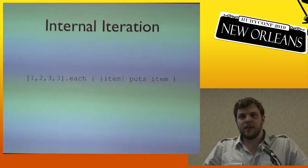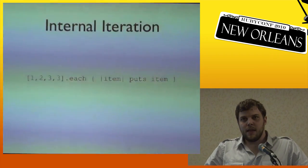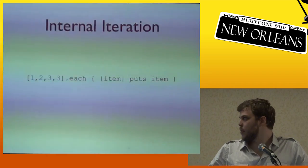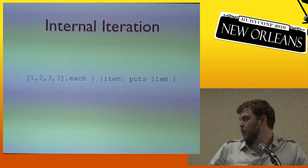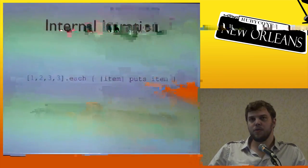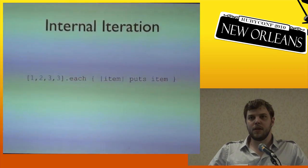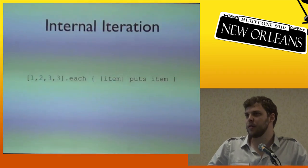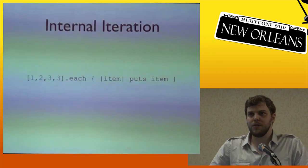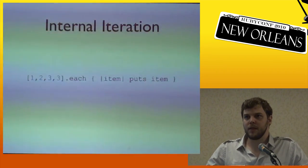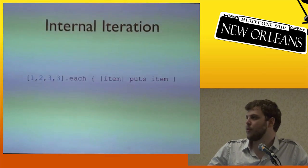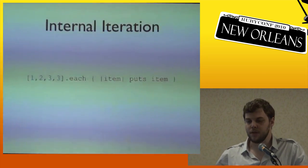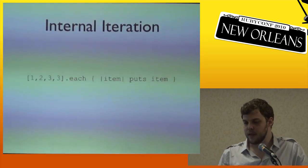While Ruby can do external iteration, we don't often do it because Ruby has more powerful iteration concepts like internal iteration. Internal iteration is where the collection object itself is able to enumerate its elements. This is probably how you usually iterate when you see Ruby.